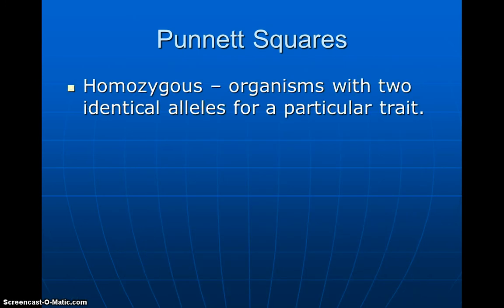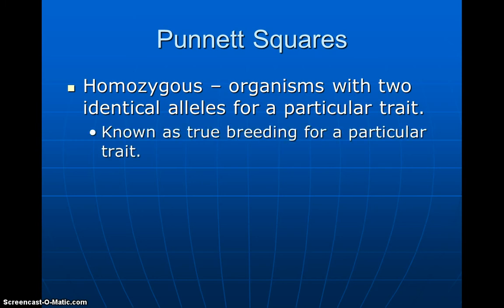So homozygous. Homozygous are going to be organisms with the two identical alleles for that particular trait, known as true breeding for a particular trait. It's going to either be represented by two big Ts or two little ts.